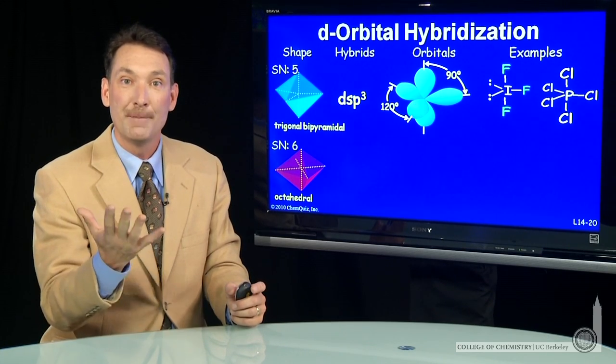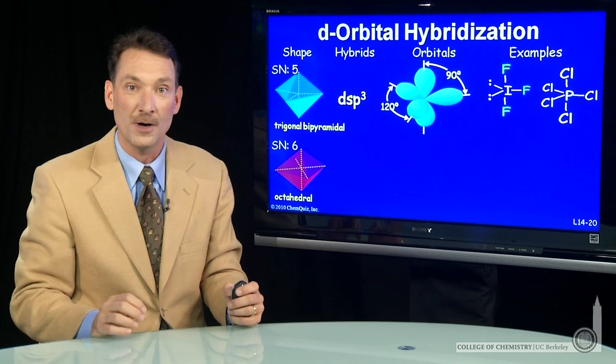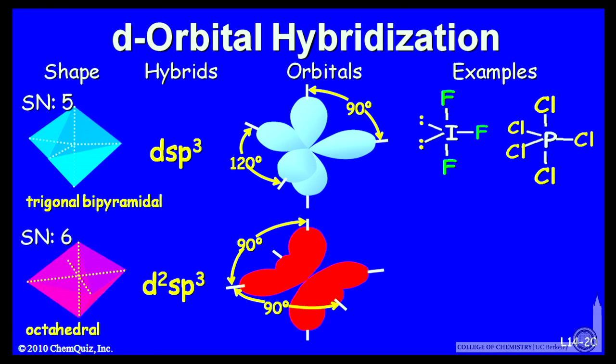So I have sp3d2 hybridization. That kind of hybridization has orbitals, six equivalent ones, that point toward the vertices of an octahedron. All the bond angles are 109 degrees.